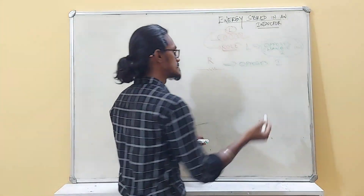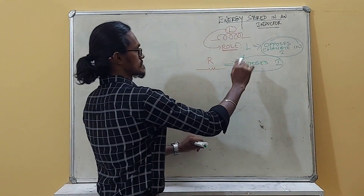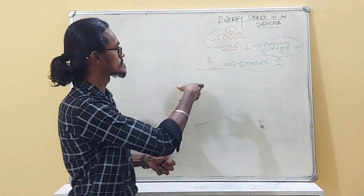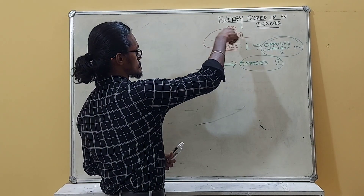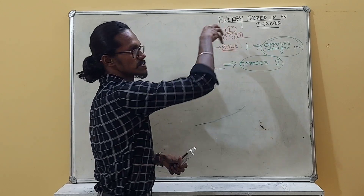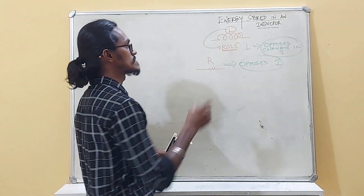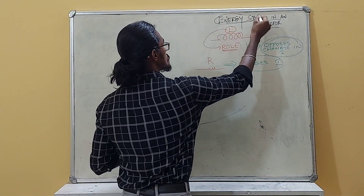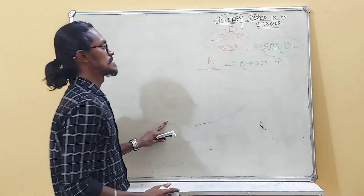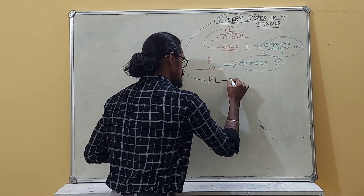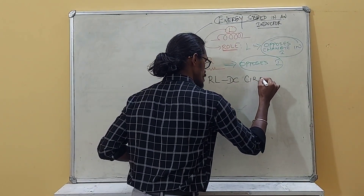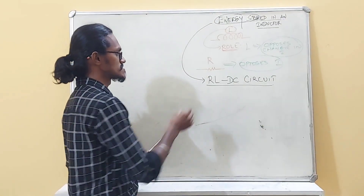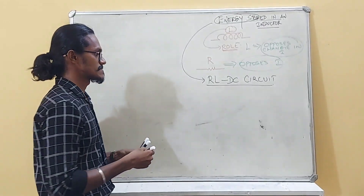Inductance opposes change in current. Because of this, energy is developed around the inductance and stored in the inductor in the form of a magnetic field. To calculate that stored energy, we consider an RL-DC circuit — a simple circuit with a resistor and an inductor.